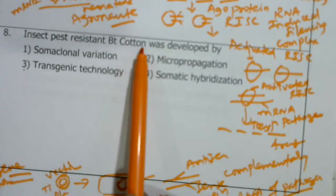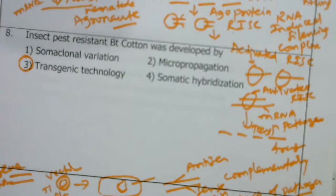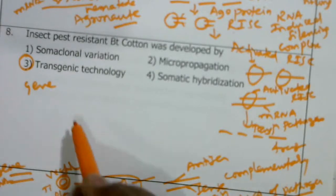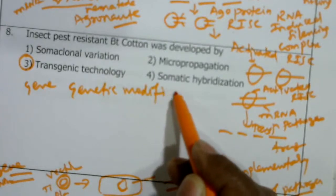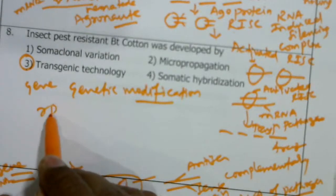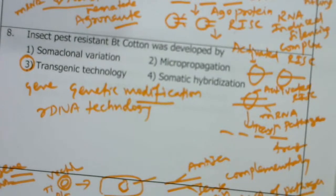Insect pest-resistant Bt cotton was developed by transgenic technology, because we use a nematode-specific gene, transfer it via a vector into a host plant cell, and make a genetic modification. We are manipulating the gene — that's why it is called transgenic technology, producing a genetically modified organism through recombinant DNA technology.